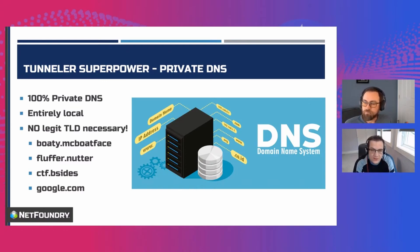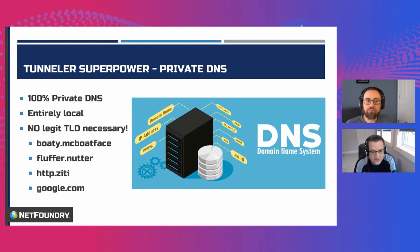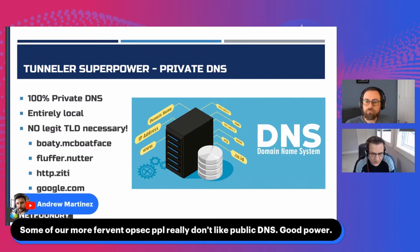Which means if you wanted to create an intercept — something like in a capture the flag scenario — you can use domains like http.zd. That's used a lot. These domains don't actually exist, but you can create these DNS names all on your own, and they're only accessible if you're running an OpenZD Tunneler.